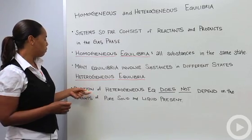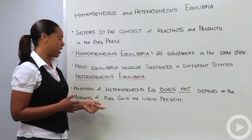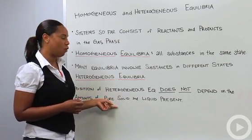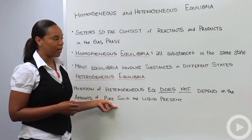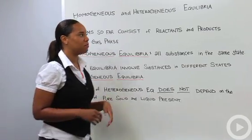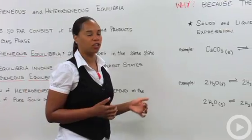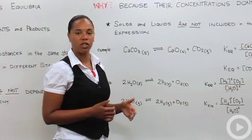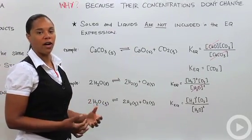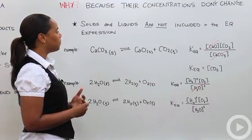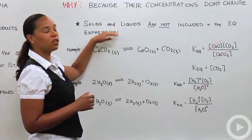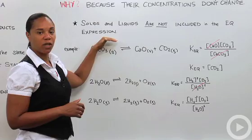The position of heterogeneous equilibrium does not depend on the amounts of pure solid or pure liquid present. Why is that? Because their concentrations do not change during the course of the reaction. We can say those are constant, which means that solids and liquids are not included in the equilibrium expression.